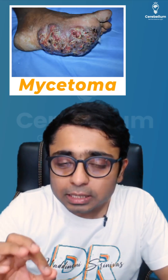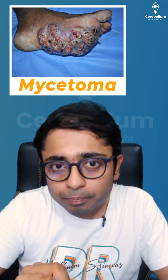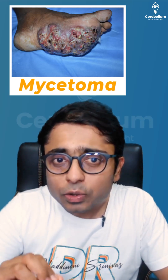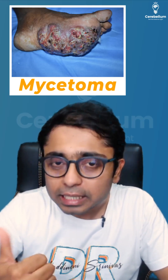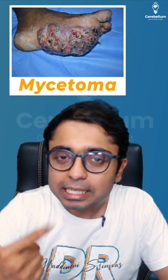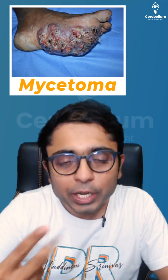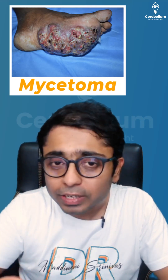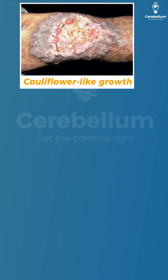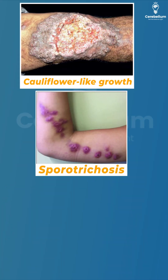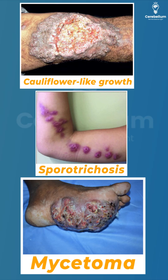The third subcutaneous mycosis is mycetoma, which has a triad of granules, sinuses, and tumefaction. Tumefaction means swelling. These three can be remembered with the mnemonic GST.